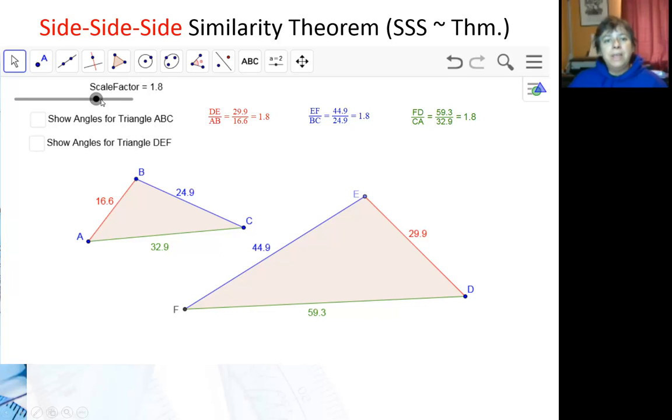So let me go ahead and change the scale factor to an easy number like two. If I have a scale factor here and all the sides are proportional, you can see they are because the ratios here actually are all equivalent.